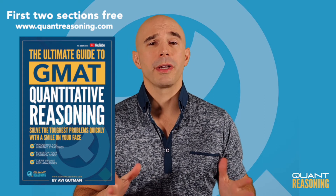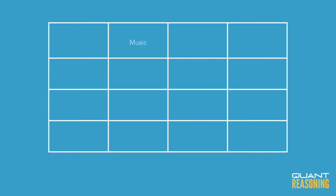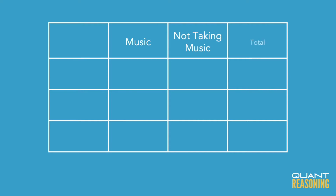This is what the Carroll diagram will look like. You're going to have your column for music — that's whether they take art or not. You're going to have your column for not music — that's whether they take art or not. And then you're going to have your total column.